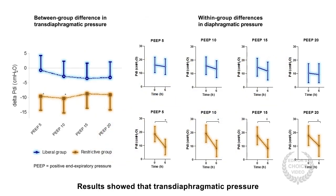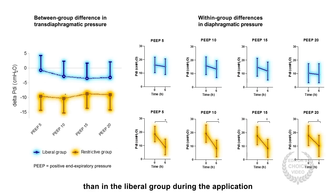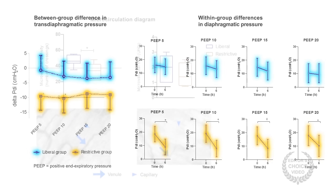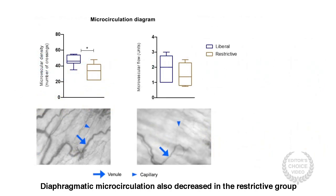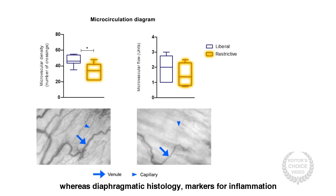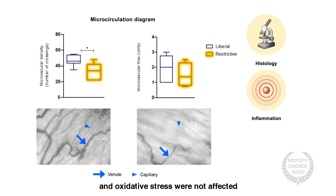Results showed that transdiaphragmatic pressure decreased more in the restrictive group than in the liberal group during the application of 5 and 10 cm H2O positive end-expiratory pressure. Diaphragmatic microcirculation also decreased in the restrictive group, whereas diaphragmatic histology, markers for inflammation and oxidative stress were not affected.